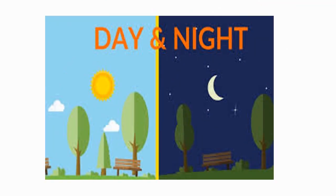How can we identify day and night? The sun has risen, so it is known as day. The moon has arrived, so it is known as night. You can see in the picture how we can identify the day and the night.